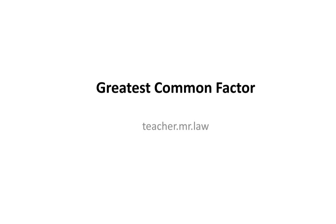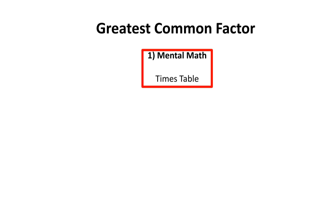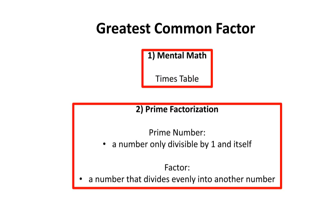In today's lesson, we'll be learning about greatest common factor. A greatest common factor, or GCF, can be found in one of two ways. The first way is using mental math; however, you'll need to be good at your times tables. The second way is using something called prime factorization. A prime number is a number only divisible by one and itself, while a factor is a number that divides evenly into another number.